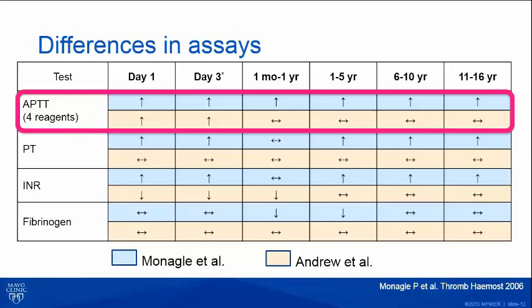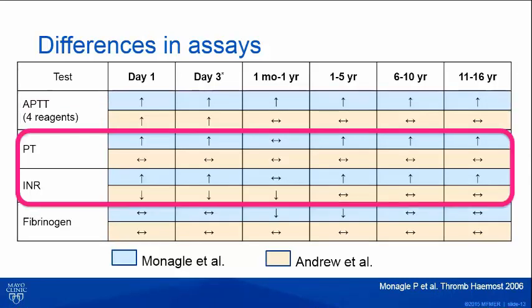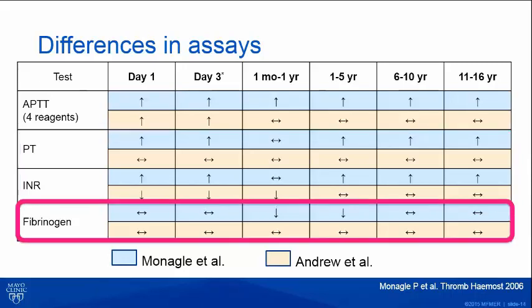The APTT was noted to be prolonged compared to adults throughout the entire childhood age groups in the Australian study, whereas this was not seen in the Canadian study — it was only seen in the neonate. PT was also different: in the Australian study it was elevated compared to adults in almost all age categories, whereas in the Canadian study it was not different even from the neonatal age group. There were some differences noted in INR as well. Fibrinogen showed differences mainly in the one-month to one-year and one-year to five-year age groups.